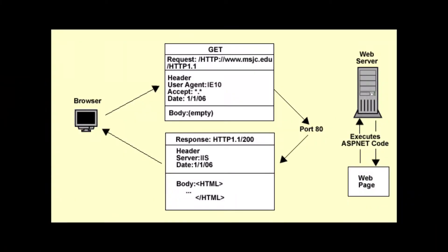The process of submitting your URL to the web server is called an HTTP request. The web server interprets the URL in the request, locates the corresponding resource, and sends it back to the requesting device. The response message is appropriately called an HTTP response.